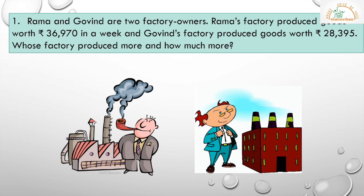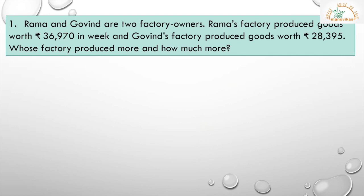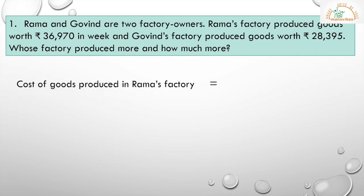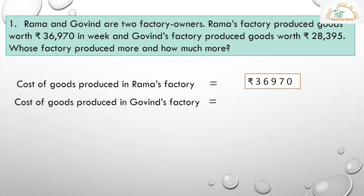When you get such problems, you will have to subtract the two numbers to get the answer. Here is the solution. Cost of goods produced in Rama's factory is equal to Rs. 36,970. Cost of goods produced in Govind's factory is equal to Rs. 28,395.